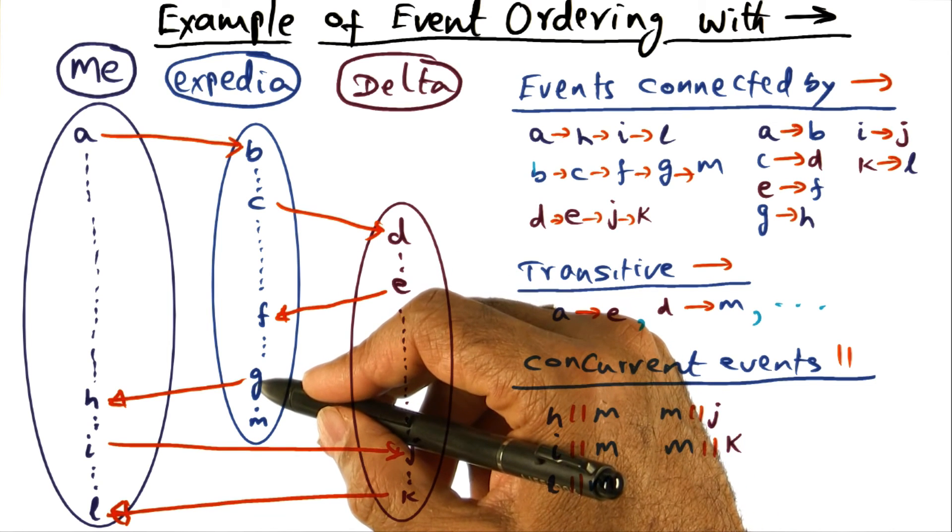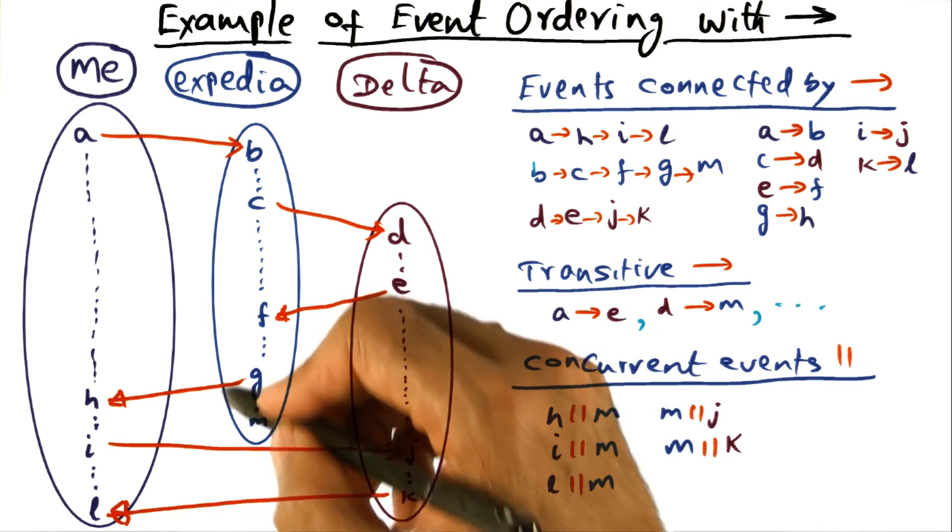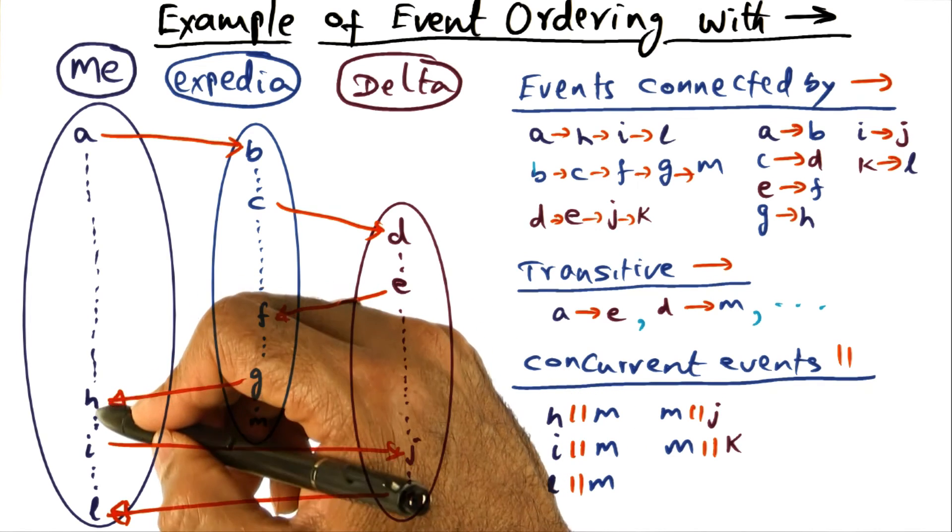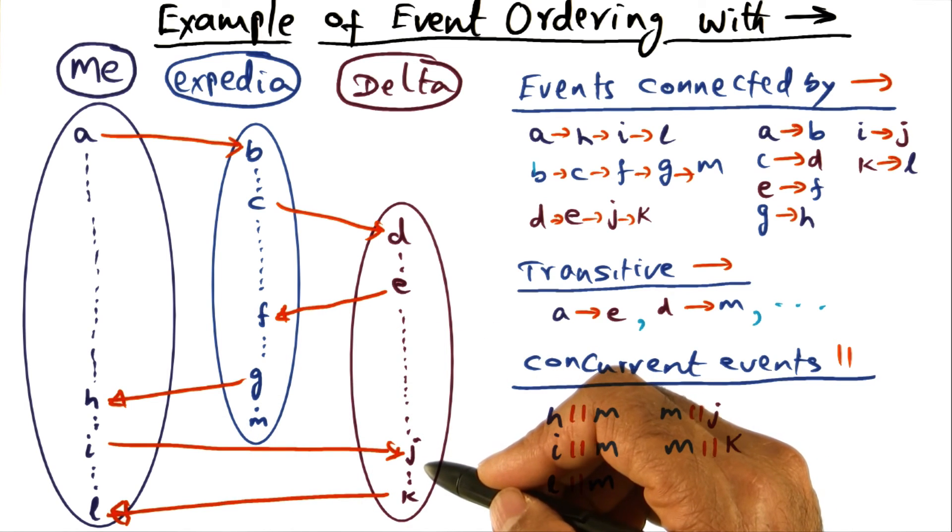But there is an ordering between the event G and the event J here, because G happened before H, H happened before I, I happened before J. So you can see that transitivity connects events across machines,